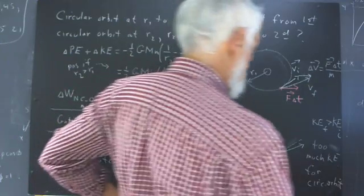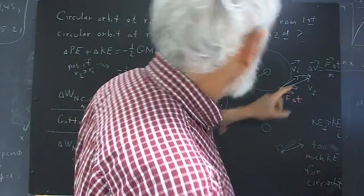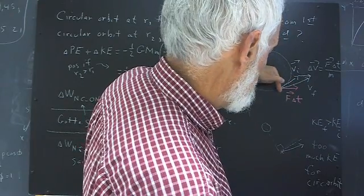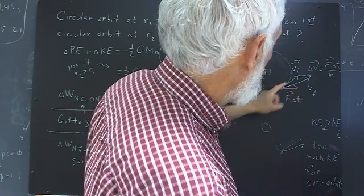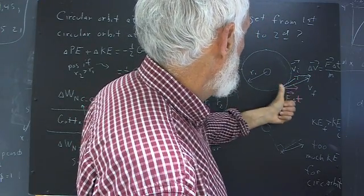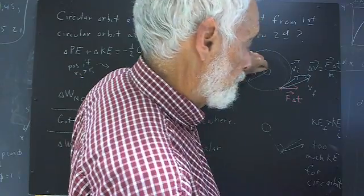Not only that, but as opposed to what we had here, when the velocity was perpendicular to the radial line, velocity being perpendicular to the radial line means that the velocity has no component in the direction of the gravitational force.